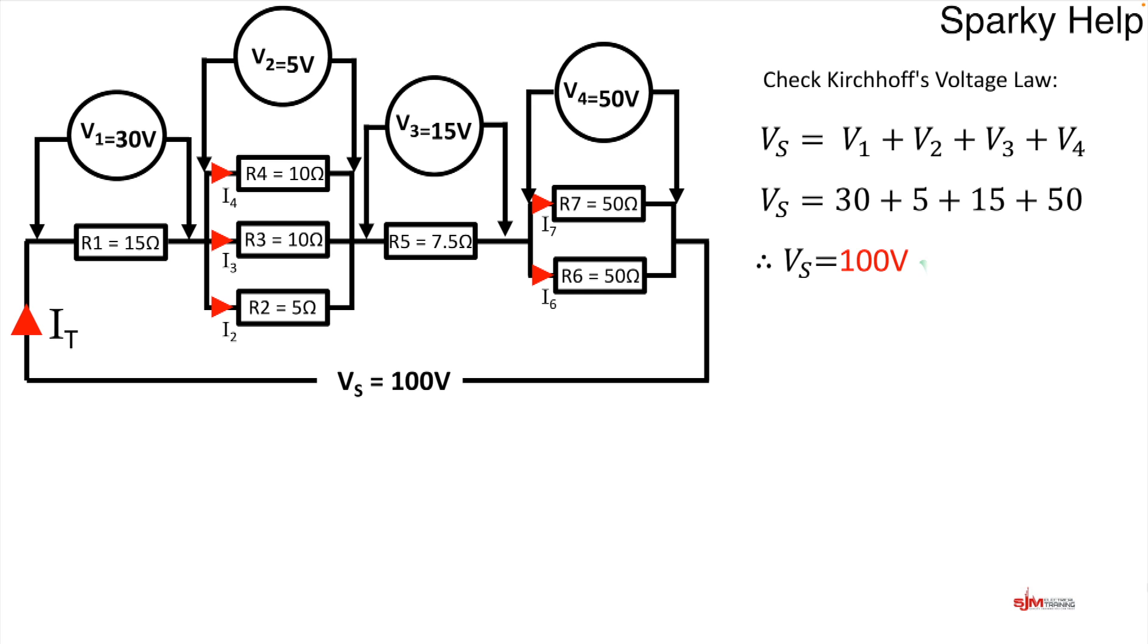We can check to make sure we are correct. We apply Kirchhoff's voltage law. Those voltages when added up should come to 100 volts. And there I've put in the values that we've got in each section. So remember in parallel voltages remain the same. So we have 30 volts across R1, and we have 5 volts across R4, R3 and R2. 15 volts across R5, and 50 volts across R7 and R6.